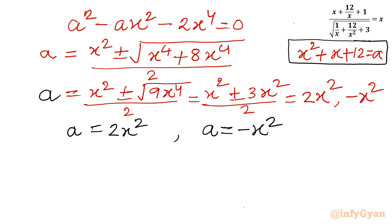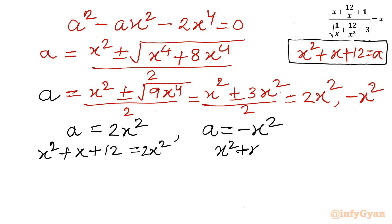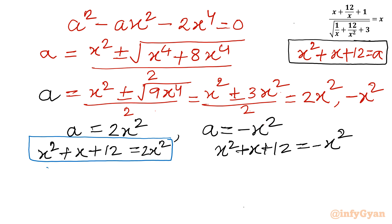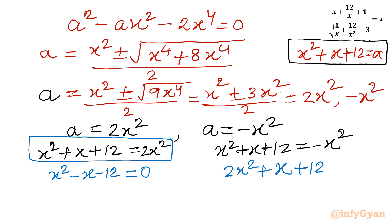Since a equals our substitution x squared plus x plus 12, we get two equations. From the first: x squared plus x plus 12 equals 2x squared, and from the second: x squared plus x plus 12 equals negative x squared. Solving the first by moving all terms to one side gives x squared minus x minus 12 equals 0. The second equation becomes 2x squared plus x plus 12 equals 0.